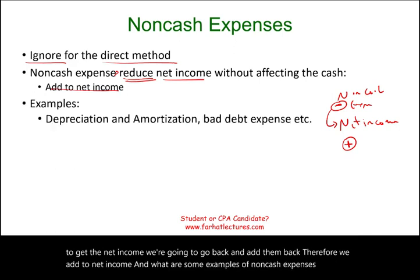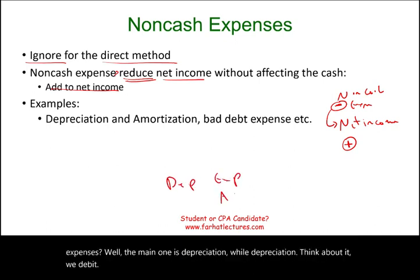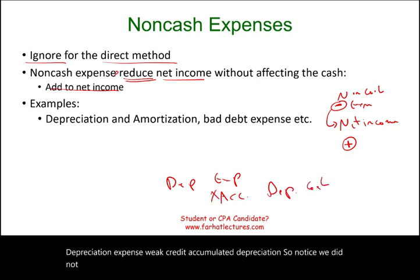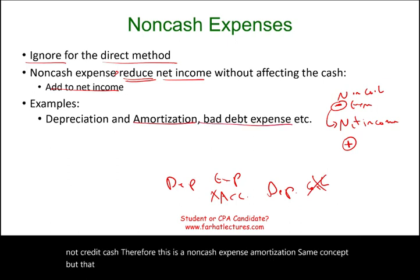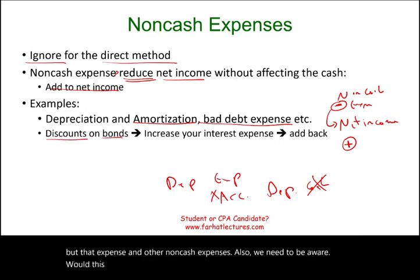The main example is depreciation. We debit depreciation expense and credit accumulated depreciation — notice we did not credit cash. Therefore, this is a non-cash expense. Amortization follows the same concept, as do other non-cash expenses. We also need to be aware of discounts on bonds payable. When we have discounts on bonds payable, the discount will increase the interest expense.